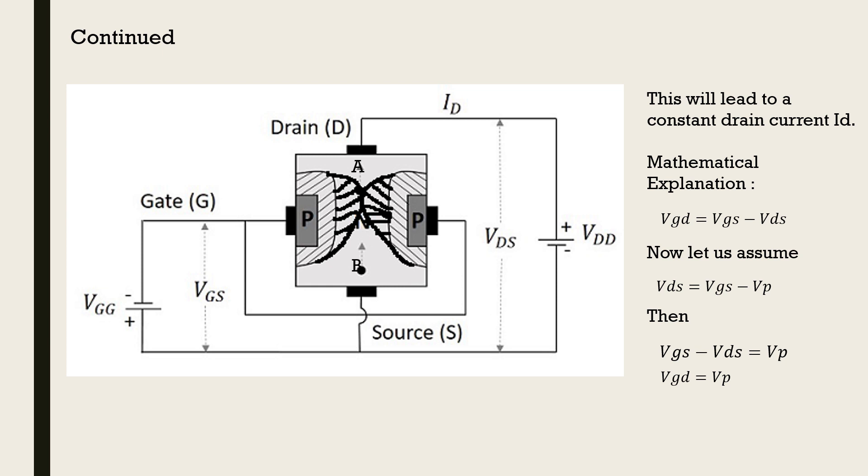Thus, point A will be at OFF state and B will be at a constant voltage due to the previous accumulation of charges. Thus, we can say that for a constant VGS supply, VDS should be less than VGS minus VP and further increase will result in a constant drain current ID.